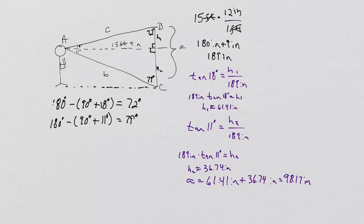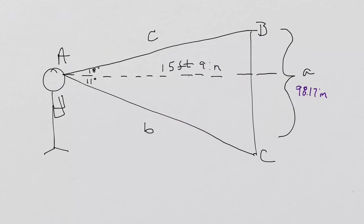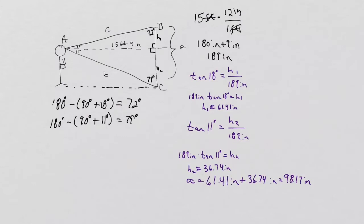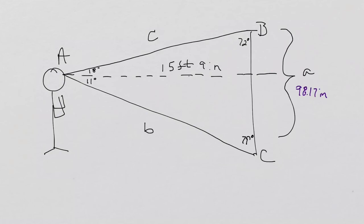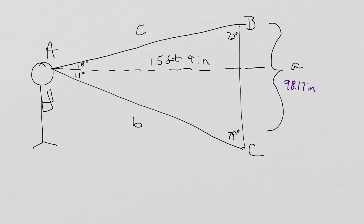I'm going to go ahead and label it. So now I know my a is 98.17 inches. I know that my angle B is 72 degrees, so we put that in there, and we know my angle C is 79 degrees. So we have A, we have all our angles B and angle C. Angle A is pretty straightforward. All you simply need to do is add 18 and 11 together, which this will give you 29 degrees. So my oblique triangle here now is essentially angles of 29, 72, and 79, and I know one side, which is side A, at 98.17.